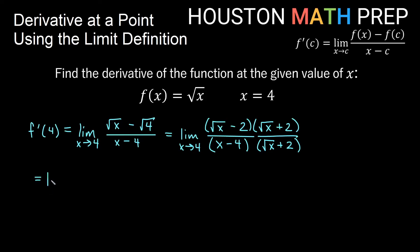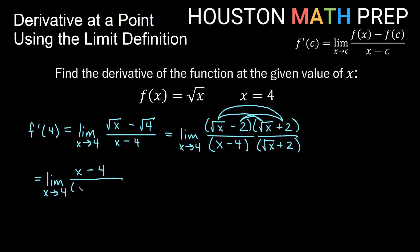Distributing on top: √x times √x gives x. With a conjugate, the middle terms cancel — positive 2√x and negative 2√x add to zero. Then the last terms give negative 2 times 2 equals minus 4. So the numerator becomes x minus 4. We don't distribute on the bottom, leaving it as (x minus 4)(√x + 2). The factor (x minus 4) cancels top and bottom, leaving the limit as x approaches 4 of 1 over (√x + 2).